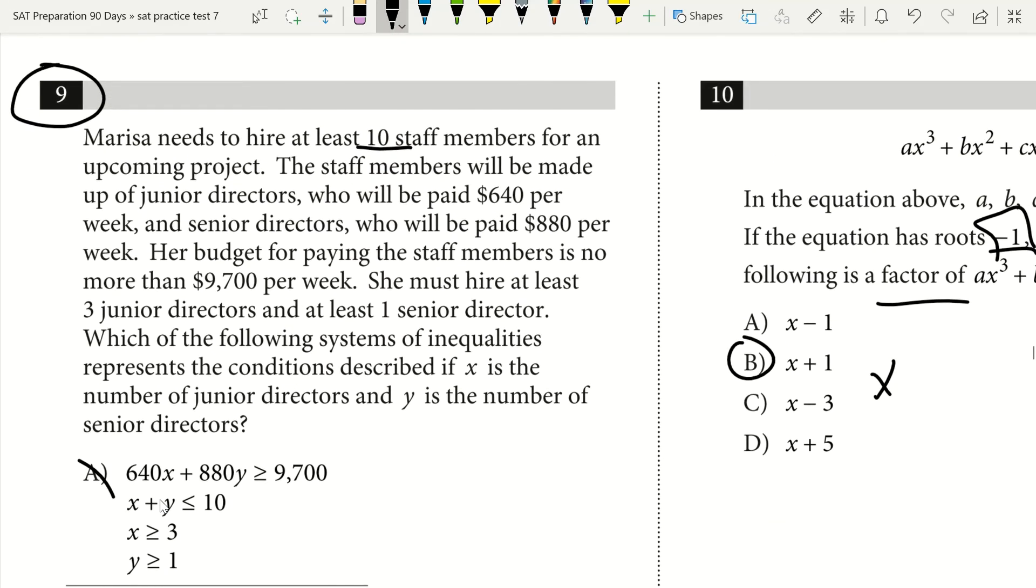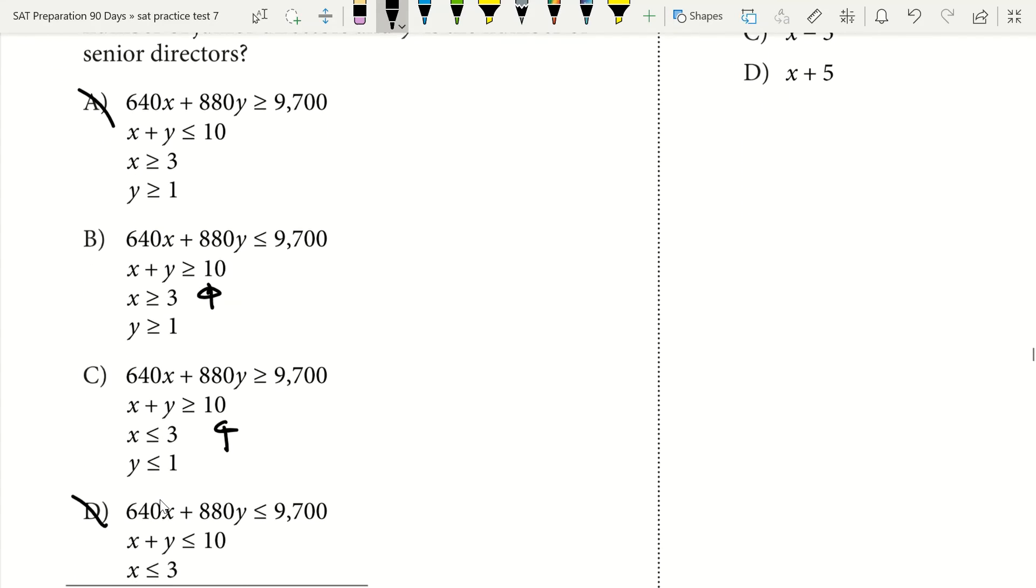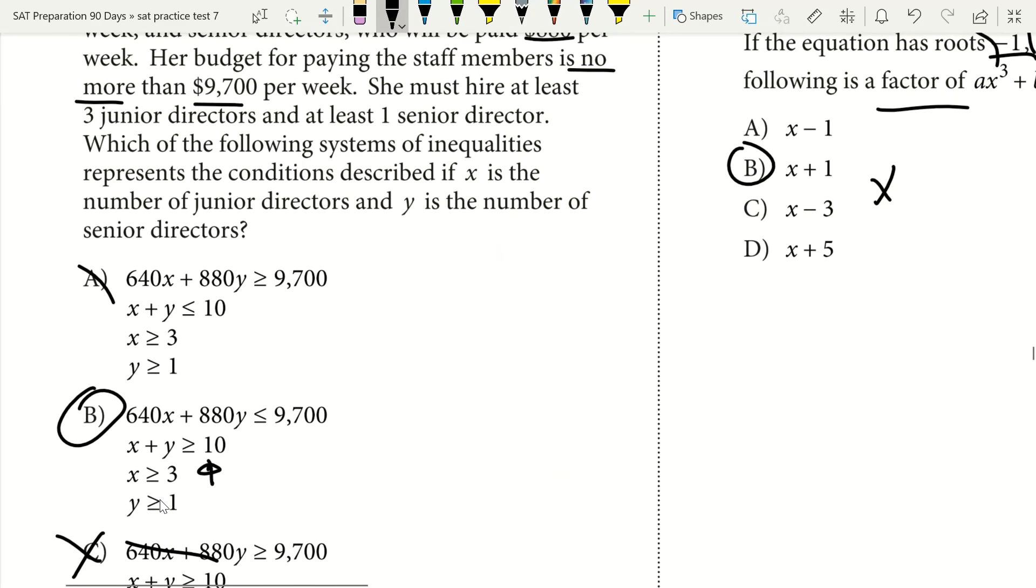Next thing I'm looking at is whatever comes next in the problem. The staff members will be junior directors paid $640, senior directors paid $880. Her budget is no more than $9,700. Therefore I need less than or equal to $9,700. I see that in option B. Option C does not have that. C is out. A, C, and D are out. B must be correct.